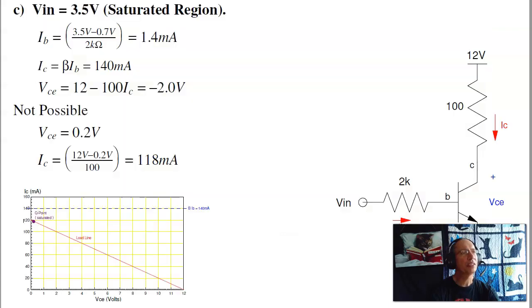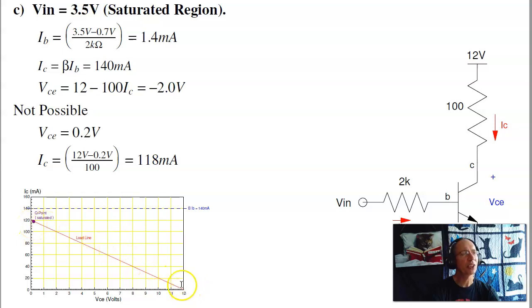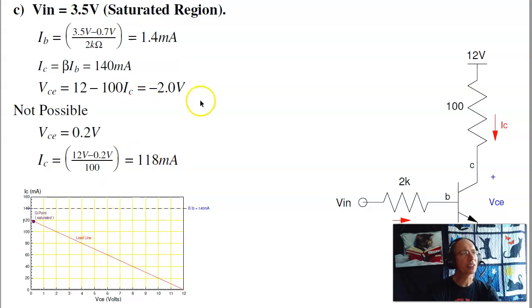In ECE 320, to operate as a switch, I want to operate at either the off state or saturated state. In either state, the power dissipated is about zero — power is volts times amps. If the current is zero, the power is zero; if the volts is zero, the power is zero. It's only when you get to ECE 321 analog electronics that you operate in the active region. If you ever operate in the active region in digital electronics, you probably did something wrong.